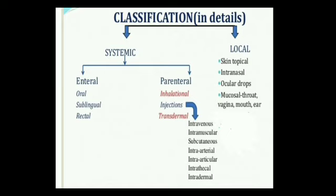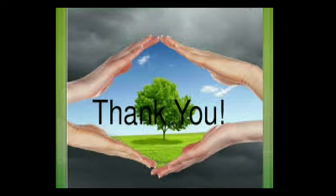In the local route: skin topical (applying poison on the skin surface), intranasal (applied on the nasal mucosa locally), ocular (eye drops), and mucosal — applied to the mucous membranes of the throat, vagina, mouth, and ear. When applied locally to these surfaces, it does not enter the systemic circulation but produces a local effect. Thanks a lot friends — please do like and subscribe to our channel. Allah hafiz.